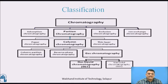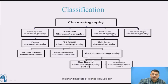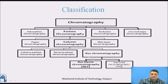The classification of chromatographic methods includes adsorption chromatography, partition chromatography, exclusion chromatography, and ion exchange chromatography. Partition chromatography further divides into thin layer chromatography, column chromatography, and paper chromatography. Column chromatography further divides, and gas chromatography divides into gas liquid chromatography. This is the classification of the different types of chromatographic methods.